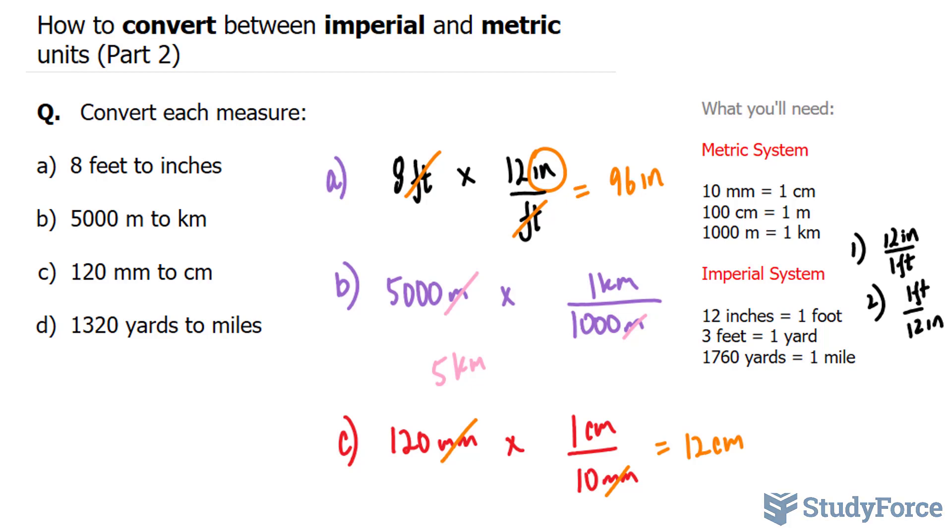And finally, for question D, we're going from 1,320 yards to miles. The conversion ratio that relates yards and miles is shown right here. The version that you are going to use is the one where the yards are at the bottom.